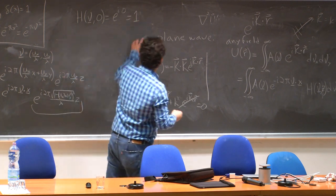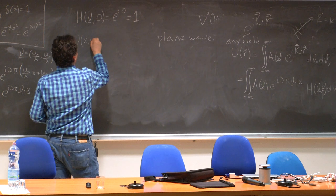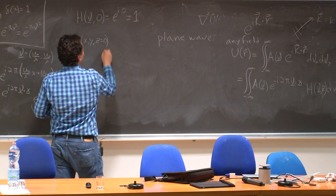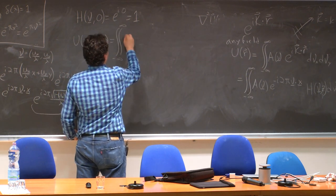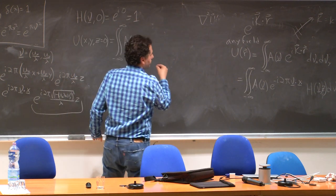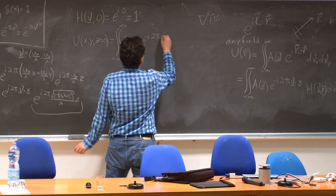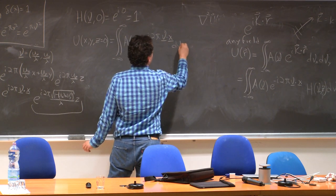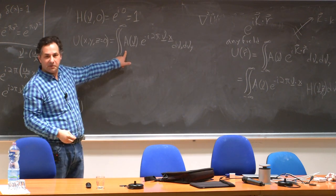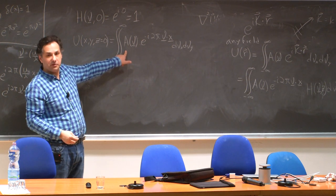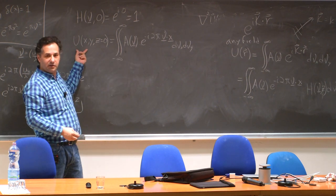So if I evaluate the field at the initial plane, u at x, y, z equals 0, then what I have is the integral from minus infinity to infinity of A of nu e to the minus i two pi nu dot x d nu x, d nu y. h goes away. And what is this formula? Have we seen this before? It's the inverse Fourier transform.